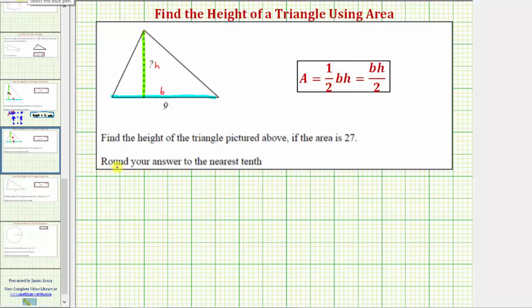The area is equal to one-half times the base, which is nine units, times the height, which is unknown, which we know must equal 27 square units.